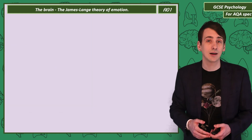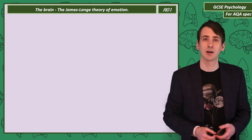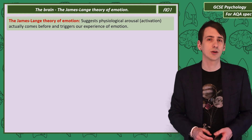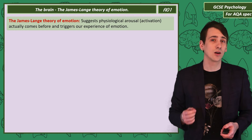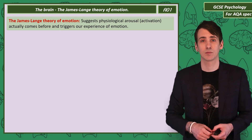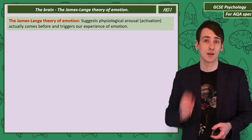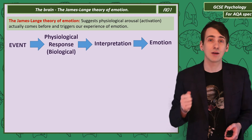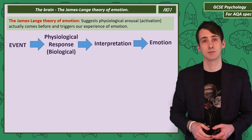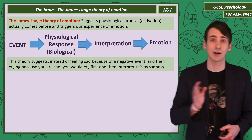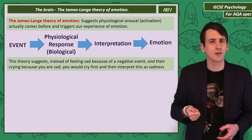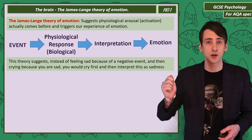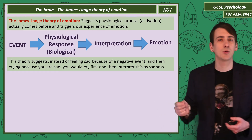When you think of emotion, you likely think that an emotion is a direct response to something bad happening. There's an interesting theory called the James-Lange theory that says something very different about the cause of emotion. The theory suggests that it's actually the physiological changes in our body that cause the emotions. As a diagram: event → biological response → brain's interpretation of that physiological response → emotion. So instead of feeling sad because of a negative event and then crying because you're sad, you would actually cry first and then interpret the crying as sadness. To link this to fight or flight: you see a tiger, your heart rate rushes, you shake and you sweat, and then you interpret all of that as fear.